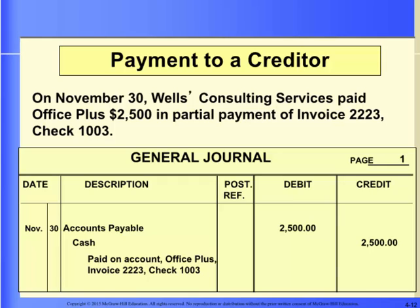Now let's look at a partial payment on account to a supplier. On November 30, Wells Consulting Services paid Office Plus $2,500 in partial payment of invoice 2,223, check 1003. When the business pays part of its bill for the equipment purchased earlier, it would debit accounts payable and credit cash for $2,500. Remember, in the general journal, always enter debits before credits.